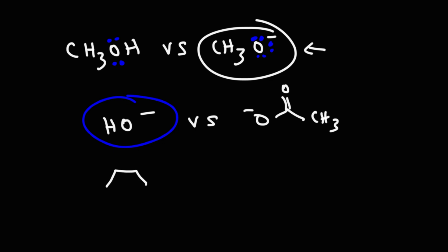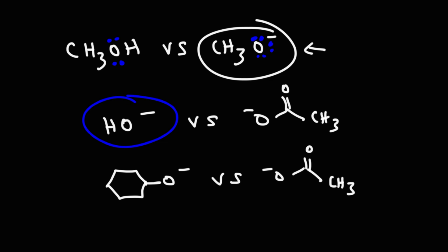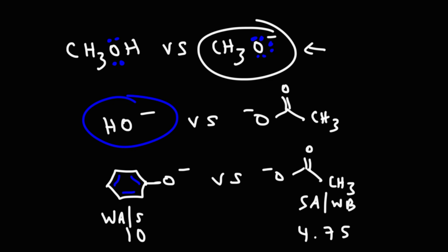Now what about comparing phenoxide with acetate — which one is the stronger nucleophile? The pKa of phenol is 10; for acetic acid it's 4.75. Acetic acid is the stronger acid, which makes acetate the weaker base. Phenoxide, having the weaker conjugate acid, is the stronger base, and it's also going to be the stronger nucleophile. So in most cases, base strength typically mirrors nucleophilic strength.